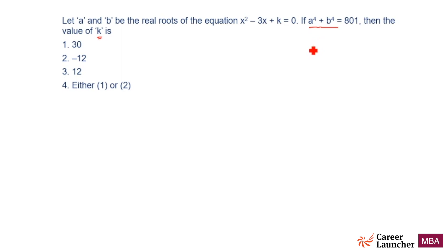For example, if a is 1, let me write down: 1 to the power 4 is 1, 2 to the power 4 is 16, 3 to the power 4 will be 81, 4 to the power 4 will be 256, 5 to the power 4 is 625.